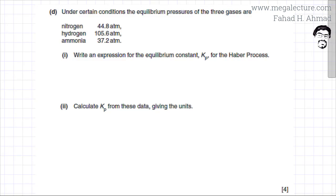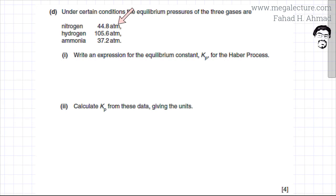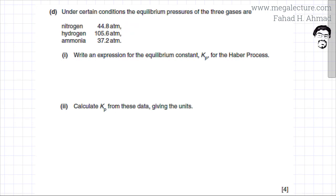The following past paper question states that under certain conditions, the equilibrium pressures of the three gases are given: nitrogen is 44.8 atmospheres, hydrogen is 105.6 atmospheres, and the partial pressure of ammonia is 37.2 atmospheres.